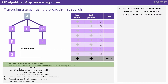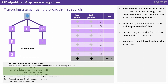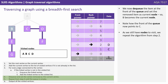We start by setting the root node or vertex as the current node and adding it to the list of visited nodes. Next, we visit every node connected to the current node. As long as the nodes we find are not already in the visited list, we enqueue them. So in this case we'll visit B, C and D and enqueue each of them. At this point B is at the front of the queue and D is at the back. We also add each linked node to the visited list. We now dequeue the item at the front of the queue and set the removed item as our current node. So B becomes our current node. Note how the front of the queue is now pointing at C.